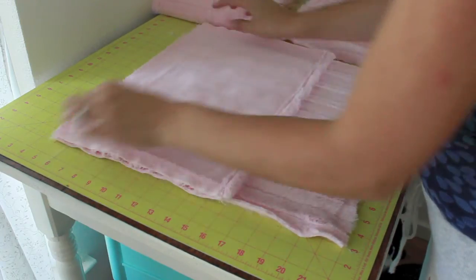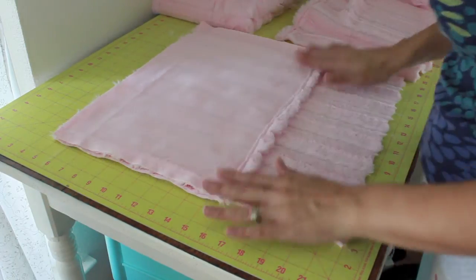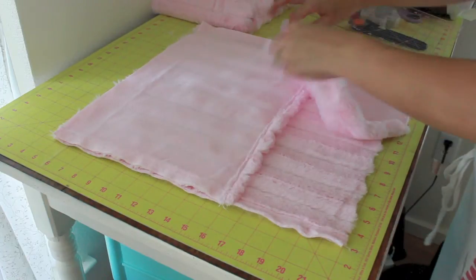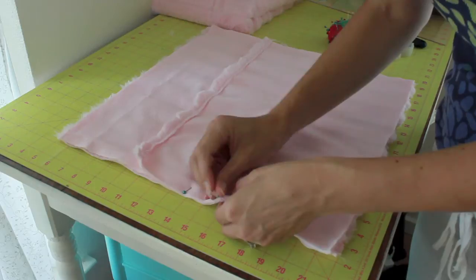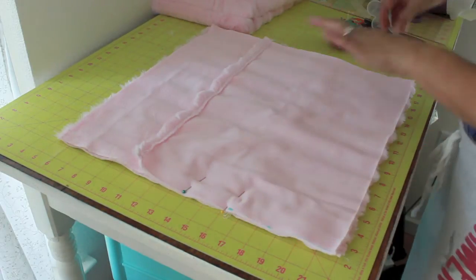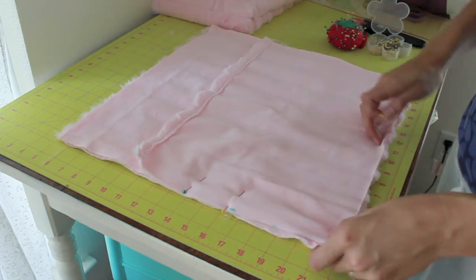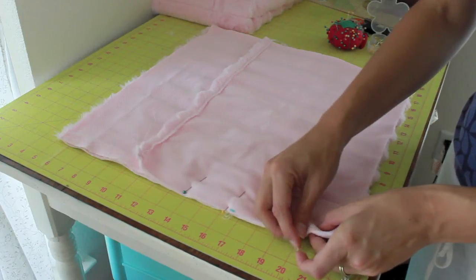Then you want to take your 17 by 17 square with the right side facing up and then your two smaller pieces with their finished edges facing down and then you want to pin all of the way around making sure to match up those edges really well.